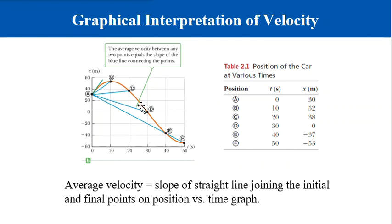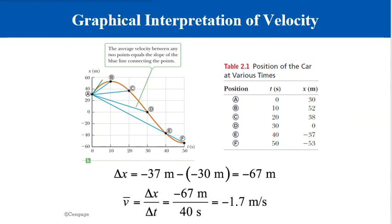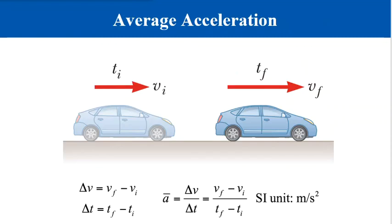The average velocity is shown by the blue lines between points. In this case, there are different average velocities between any distinct pair of points, so we cannot say the object has a constant velocity. We therefore need a new concept, which we refer to as acceleration.